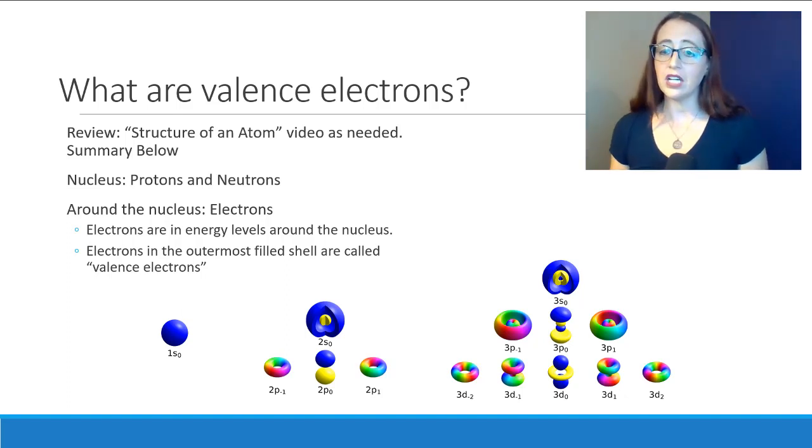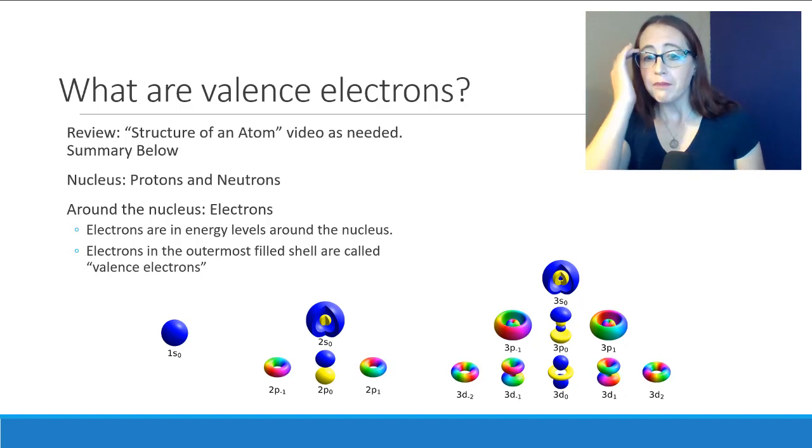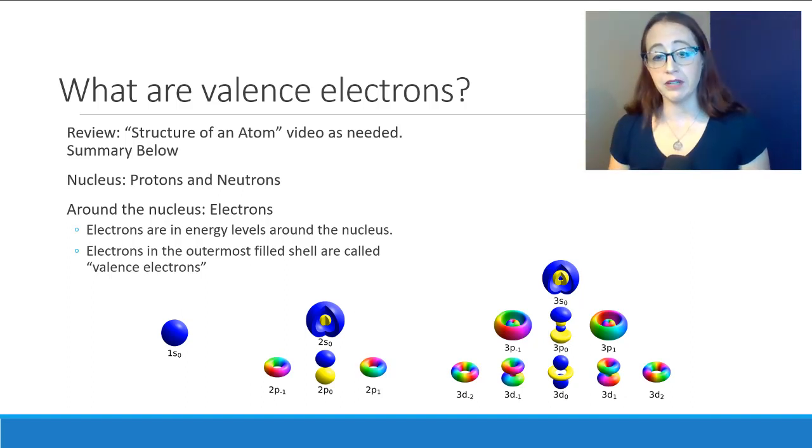Valence electrons are generally what determine how an atom can form ions and how they can bond with other species. Being able to calculate the number of valence electrons is useful in so many topics in general chemistry, organic chemistry, and beyond. So you're going to need to know how to do that, and this video will show you.